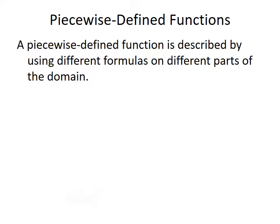Now let's talk about piecewise defined functions. A piecewise defined function is described by using different formulas on different parts of the domain. An example of a piecewise function we're already familiar with is the absolute value function: the absolute value of x is defined to be positive x if x is greater than or equal to 0, or negative x if x is less than 0.